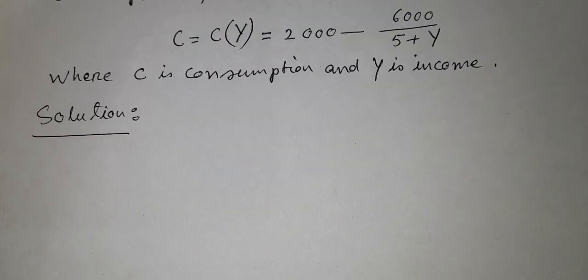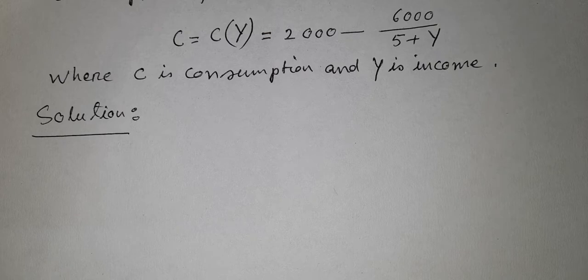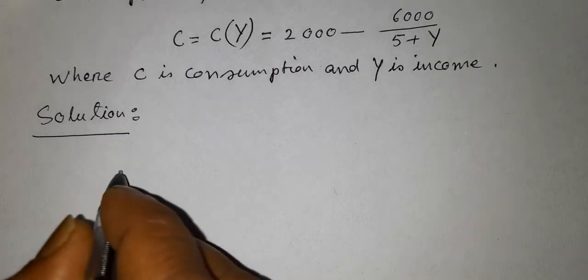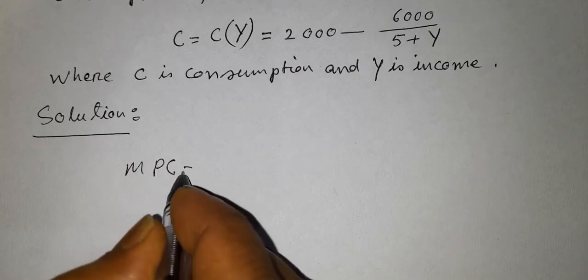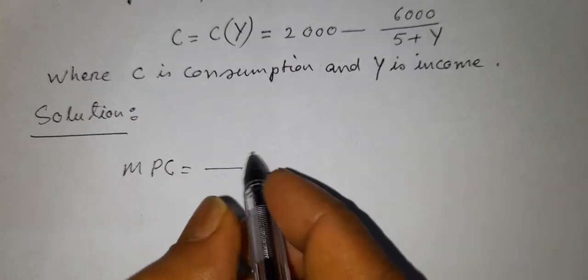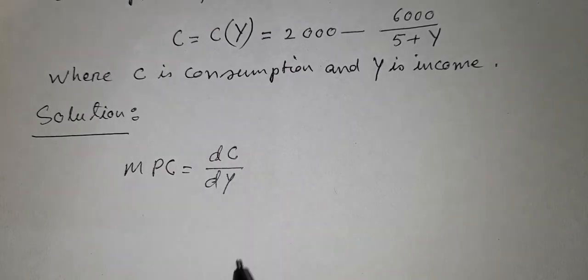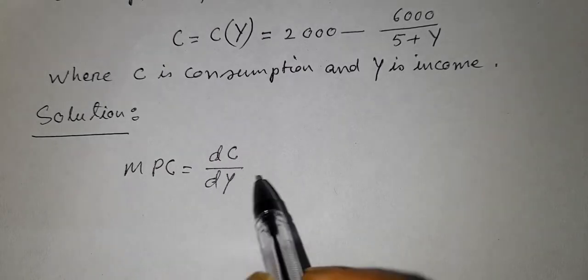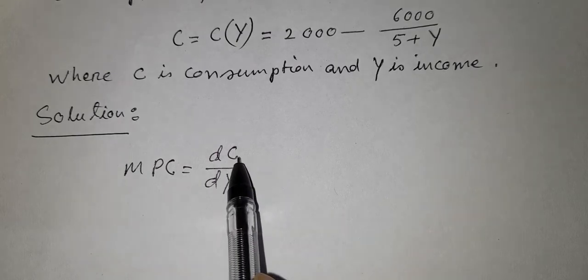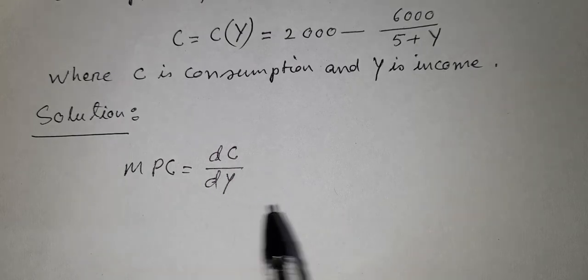Solution. We know that MPC, that is marginal propensity to consume, is the rate of change in consumption with respect to income. Therefore MPC is equal to dc/dy, that is the derivative value of the consumption function with respect to income.